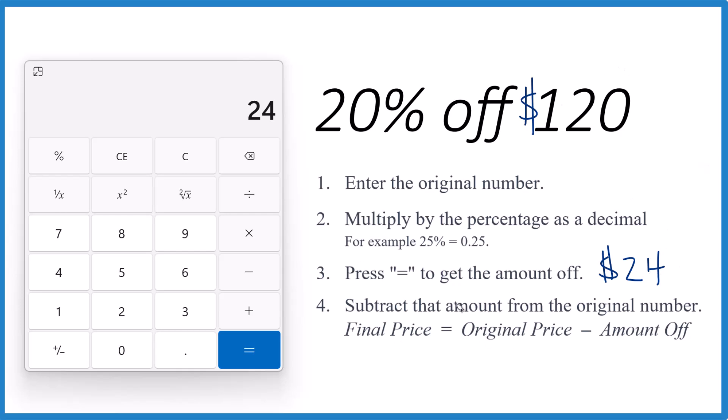To get our final price, we take the original, that's the 120, subtract how much we save, that's the 24. And that gives us our final price, which is $96. So when you take 20% off 120, you end up with 96.